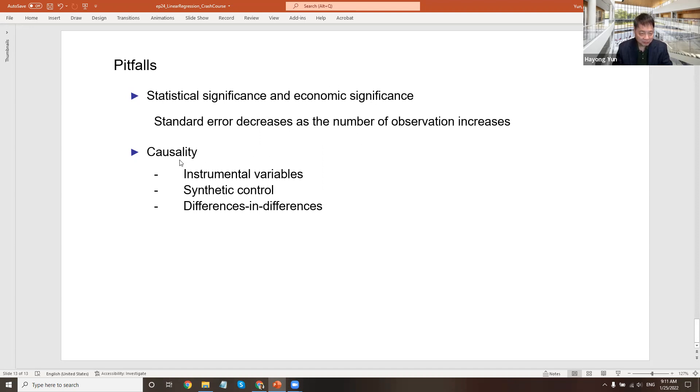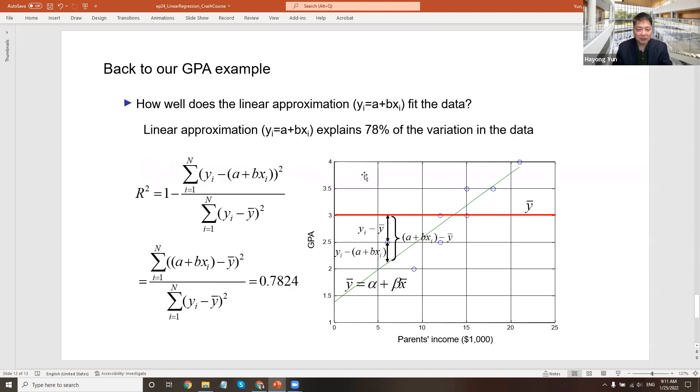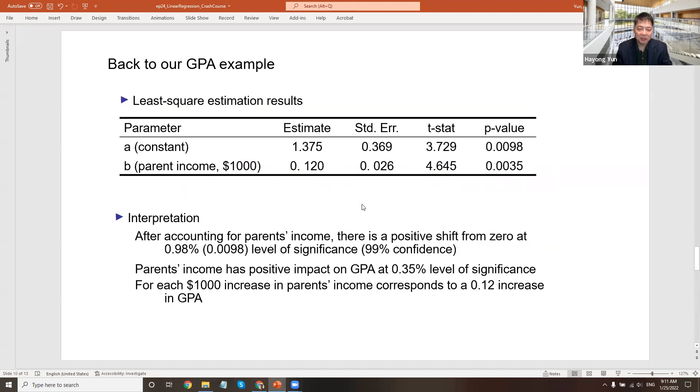Also, there's a causality issue, meaning that we do find a significant relationship between the GPA and parent income. The t-statistics is larger than 2. But that doesn't mean that the parent having higher income caused the student to have higher GPA. It is possible that higher parent income let the student buy tutors and preparation and nice textbooks and references and get a high GPA. That is possible. That's probably the story that many like to believe.